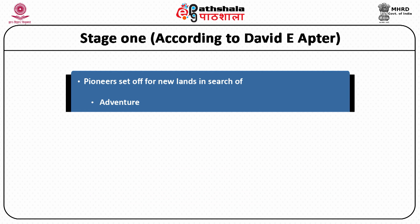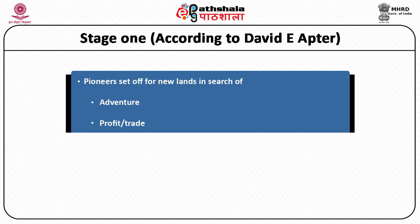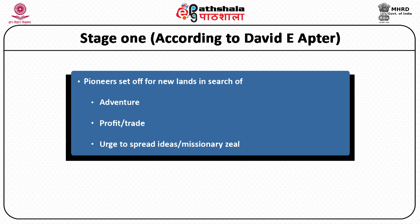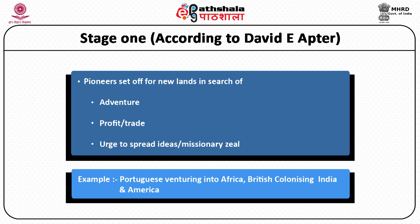Stage-wise steps given by David Apter are very important, talking about modernization in a few stages. In stage one, colonial powers like the British who ventured into making colonies in India and Asia, and the Portuguese who went into Africa, entered these new lands — mostly for trade and profit, but also with a missionary zeal: to convert people of the so-called uncivilized world into the Western civilized world.